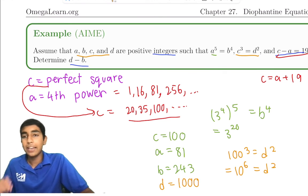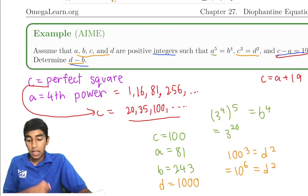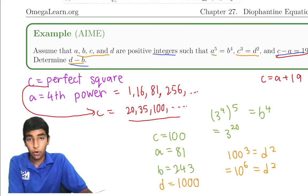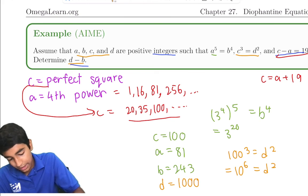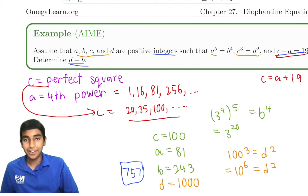And we were trying to find d - b. So we do 1000 - 243. And what is 1000 - 243? That's 757. And that is the final answer.